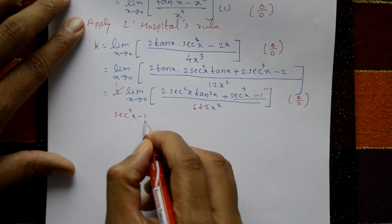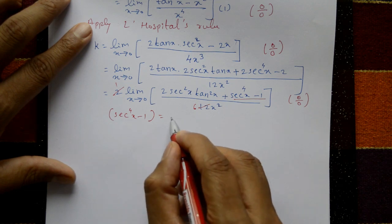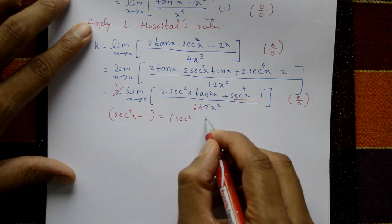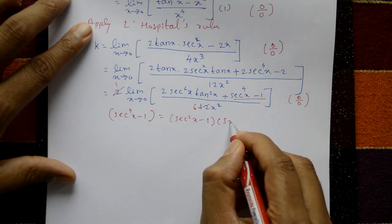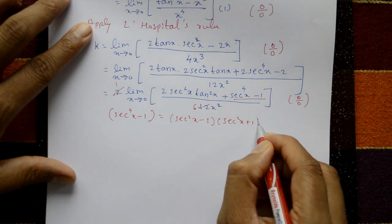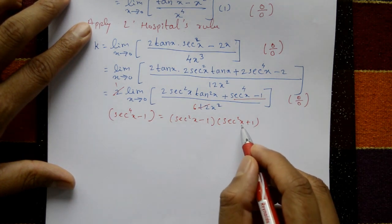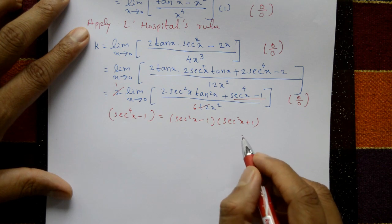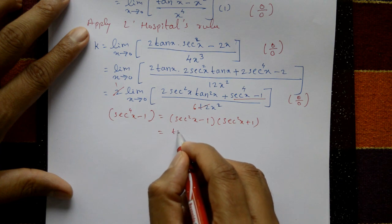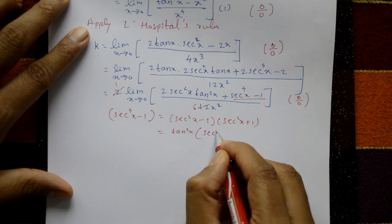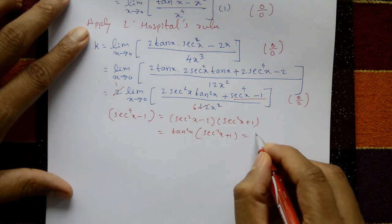This is again 0/0 form. Note that sec⁴x minus 1 is a difference of squares: (sec²x minus 1)(sec²x plus 1). And sec²x minus 1 equals tan²x, so this becomes tan²x times (sec²x plus 1).